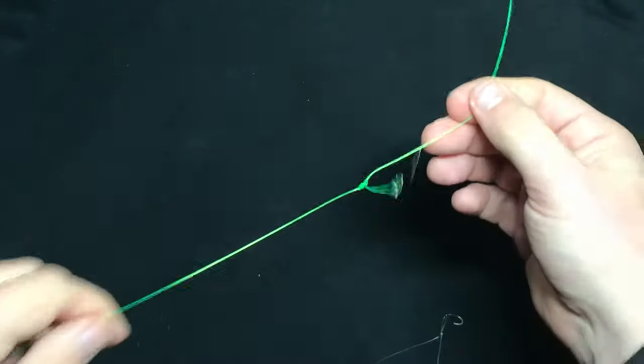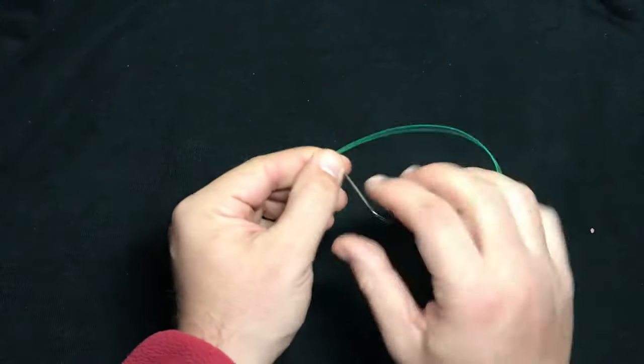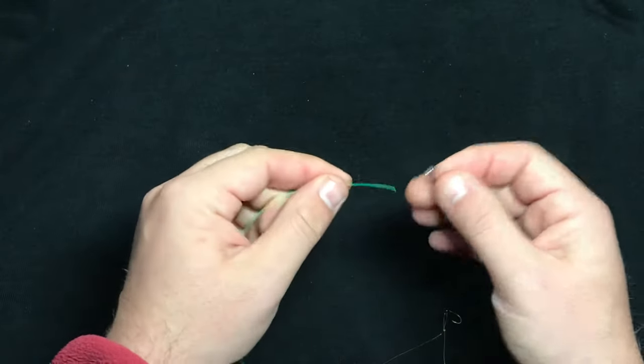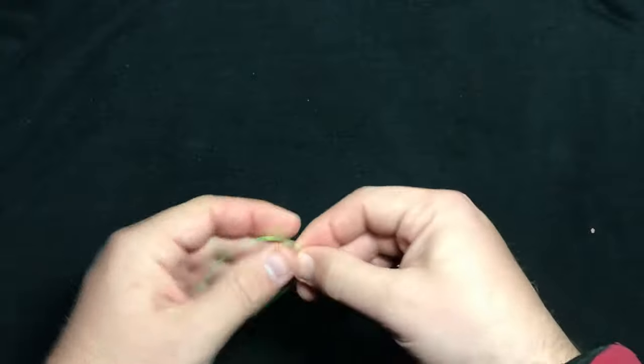Now you've got one hook on the dropper loop and we're going to come to the other end of our line and tie our second hook onto it. And what I'm going to do with this is tie a polymer knot.